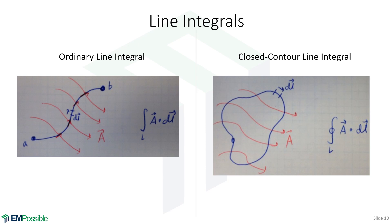More on line integrals. In electromagnetics, a line integral tends to be some vector function A dot product with the differential length, where A would be an electric or magnetic field. This dot product calculates the component of A in the direction of L. If the field were completely perpendicular to the line, the line integral would be zero — there has to be some component of the vector tangential to the line. The closed contour line integral is the same mathematically, other than the start and end point are the same, so we perfectly enclose some surface area.